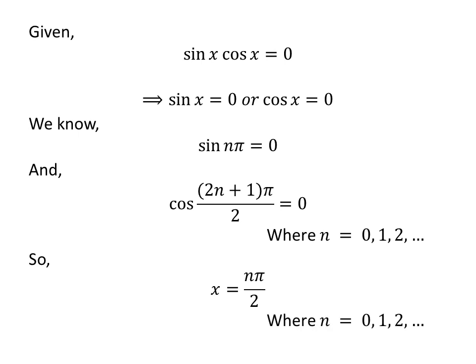From the above statements, we can say that if x is equal to n times pi over two, where n is a whole number, then sine of x times cosine of x is equal to zero.